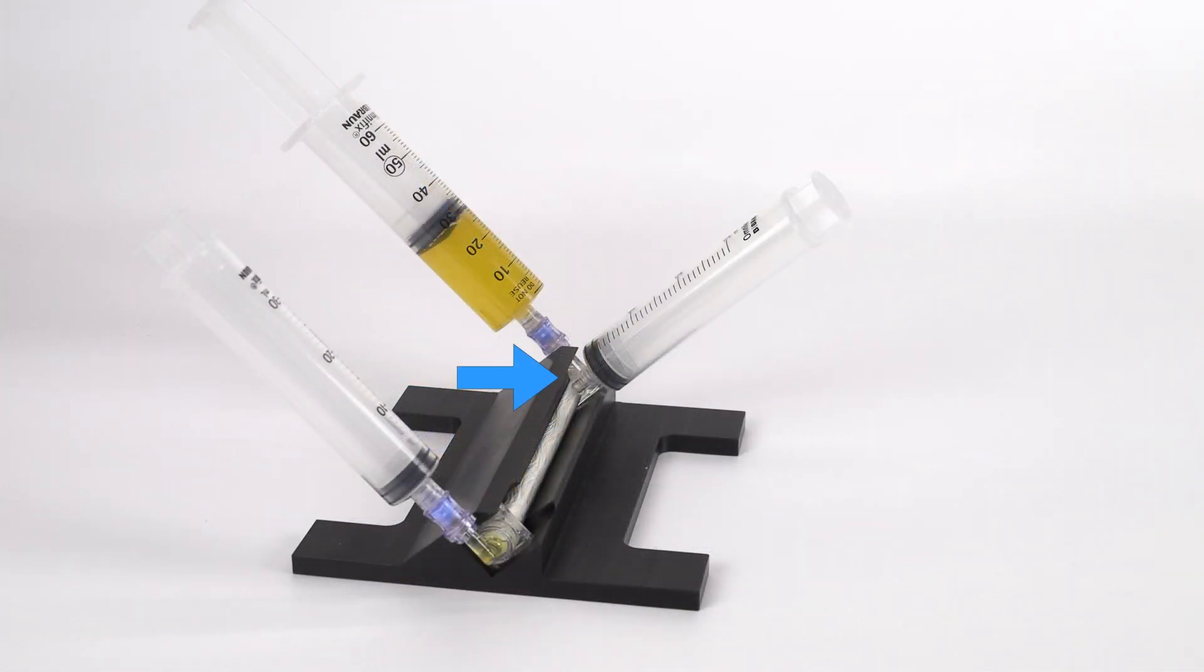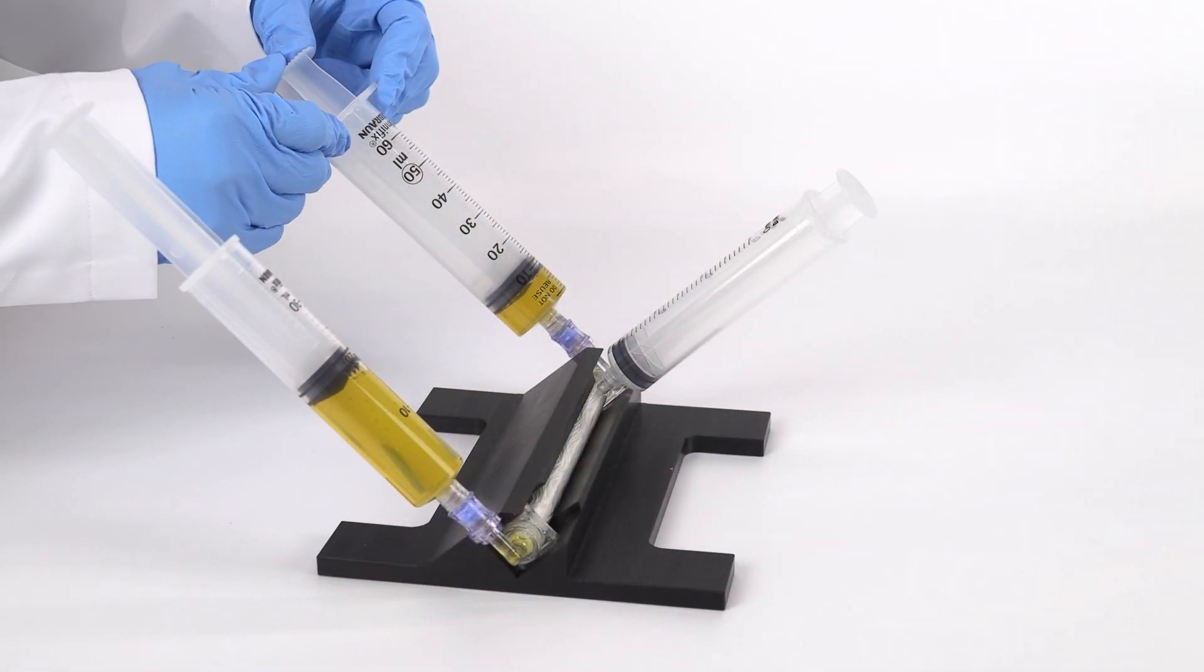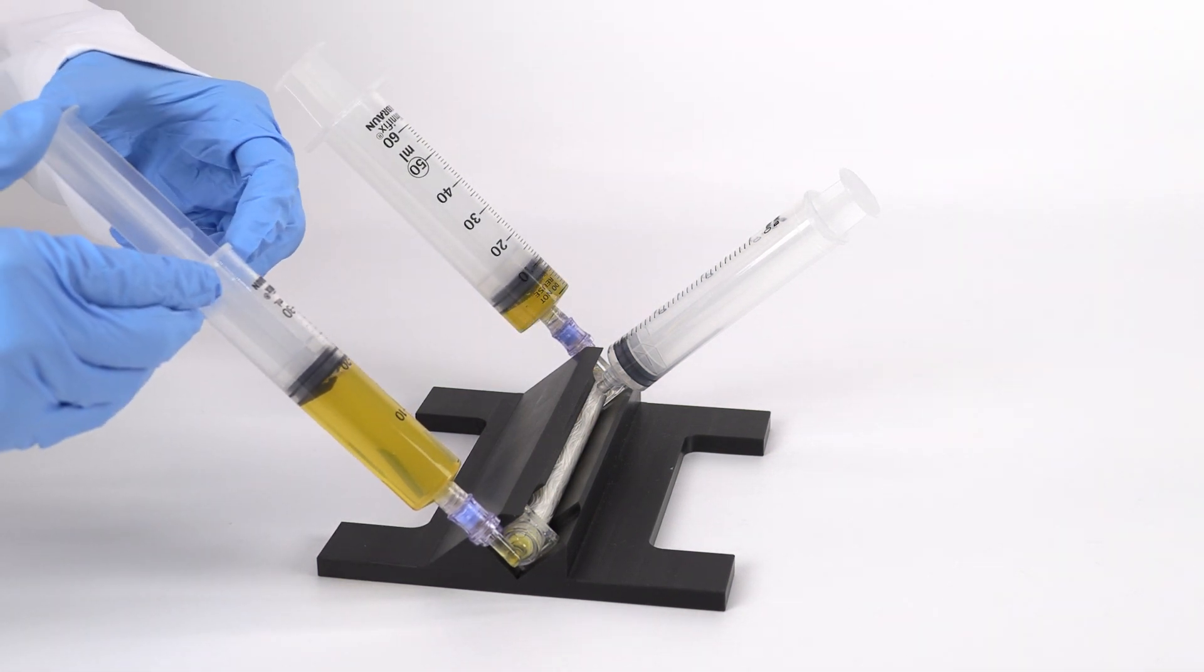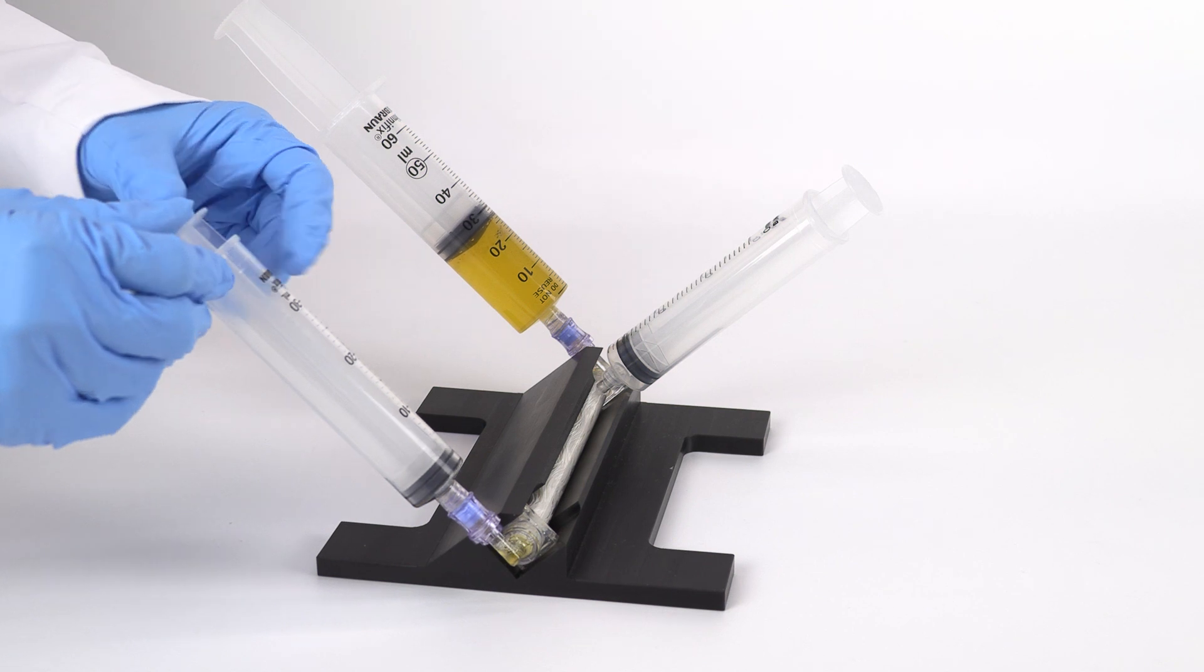Break the seal of the effluent syringe. Remove the red cap and attach the syringe to the effluent port. Begin the filtration process by injecting the plasma back and forth through the syringes until the plasma volume reaches approximately 10 milliliters.